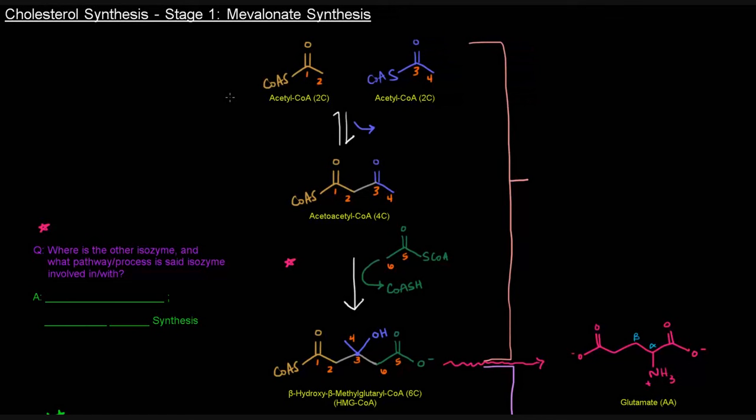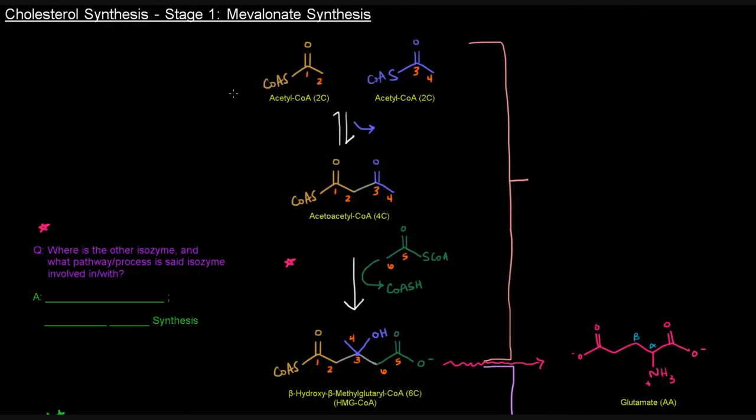Okay, so first up in cholesterol synthesis, stage one is basically making mevalonate. We make it by combining three acetyl-CoAs, and we're going to start here with two acetyl-CoAs.